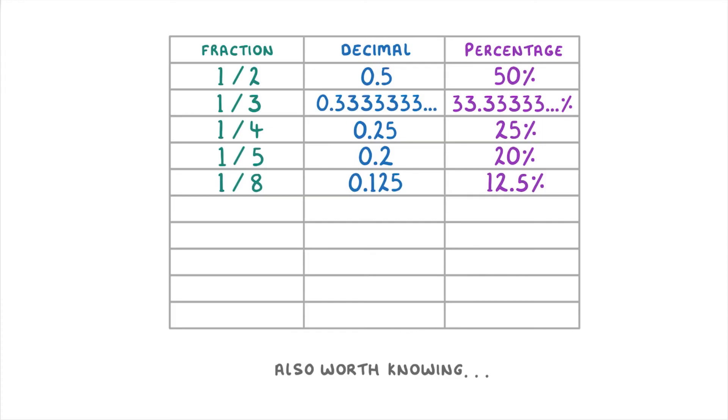For example, if we wanted to find out what 3 over 8 is equal to, then it would just be 3 times as much as 1 over 8. So 0.375 as a decimal or 37.5% as a percentage.